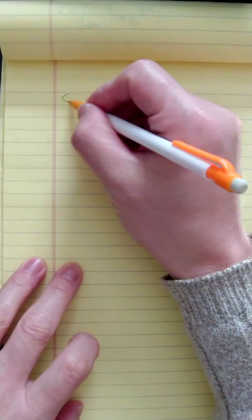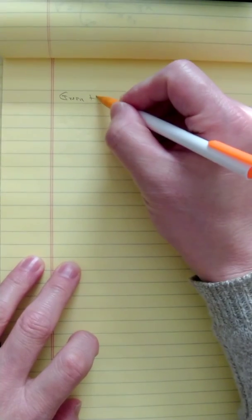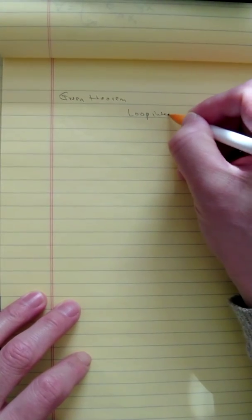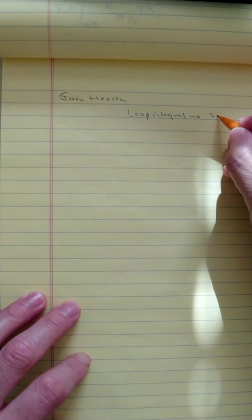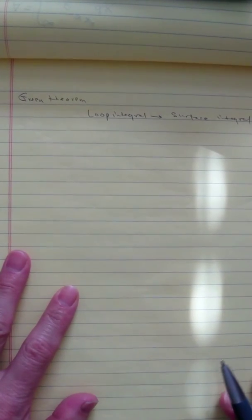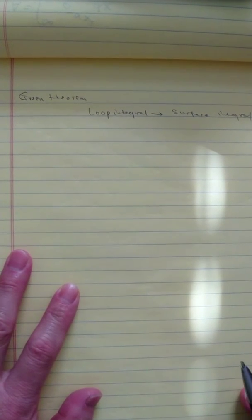Essentially, we're going to learn three different theorems. The first theorem is what we call the Green's Theorem. And what this does is essentially converting the loop integral to a surface integral. So essentially what we are going to do is we're going to change from loop integrals to surface integrals.